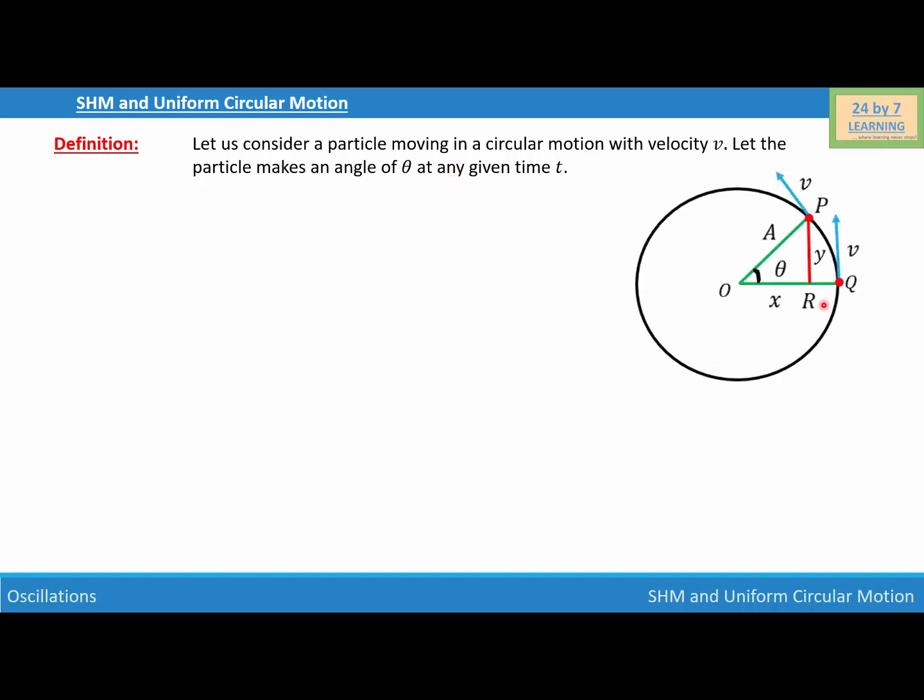So here is the picture where you can see particle q is moving in a circular path. I am going to consider two different positions for the particle and the positions are basically p and q. So the particle is going from q to p and let the velocity of the particle is v at these two points. Now, since the particle is moving from q to p, then the angle at the center of the circle will be this angle, which is theta.